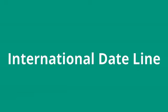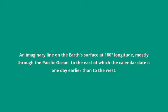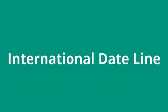International Date Line: An imaginary line on the Earth's surface at 180 degrees longitude, mostly through the Pacific Ocean, to the east of which the calendar date is one day earlier than to the west.